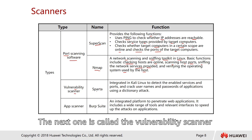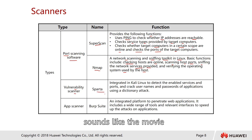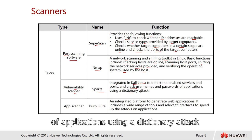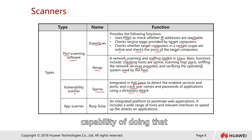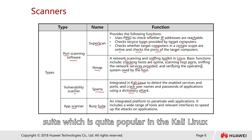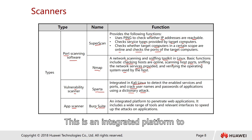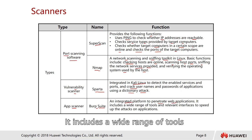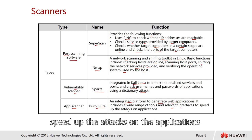The next type is the vulnerability scanner, with an example called SPARTA — an integrated Linux software that detects enabled services and ports, and also tries to crack usernames and passwords of applications using a dictionary attack. The next type is the app scanner. A popular tool is Burp Suite, which is an integrated platform to perform penetration tests for web applications. It includes a wide range of tools to speed up the attack on applications.